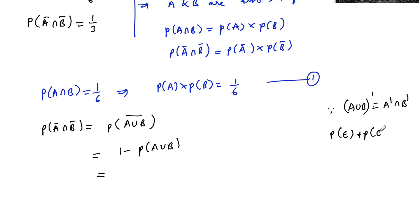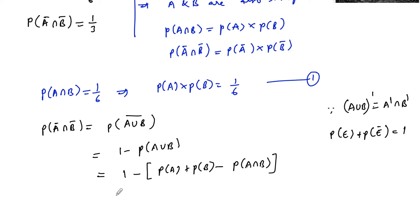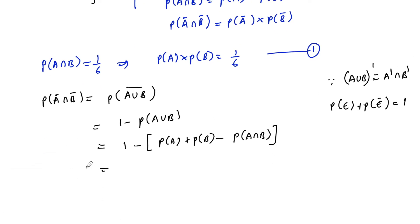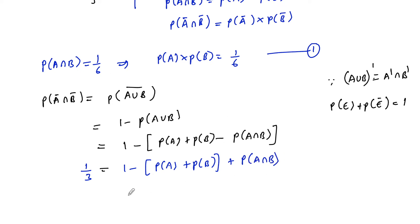Since probability of an event plus probability of its complement equals 1, we have 1 − P(A∪B). By the addition theorem, P(A∪B) = P(A) + P(B) − P(A∩B). It is given that P(Ā∩B̄) = 1/3, so 1/3 = 1 − [P(A) + P(B) − P(A∩B)].